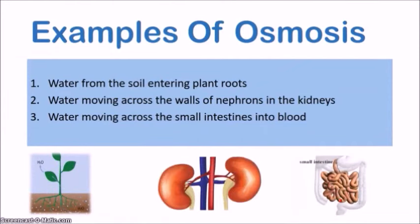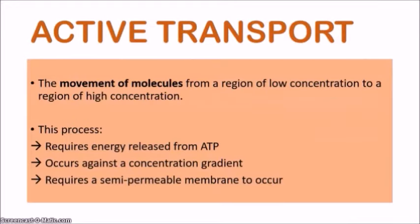Let's look at some examples of osmosis. First, water from the soil entering plant roots — that's how plants obtain their water. Second, water moving across the walls of nephrons in the kidneys, which filters the blood and determines how much water passes into urine. Third, water moving across the small intestines into the blood, where it is transported to all cells of the body. These are three common examples of osmosis.